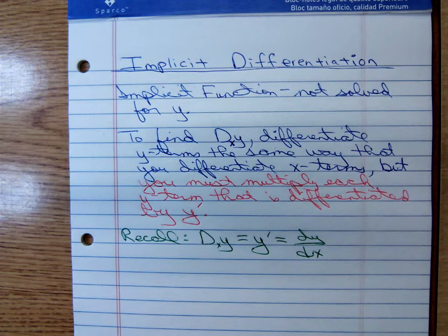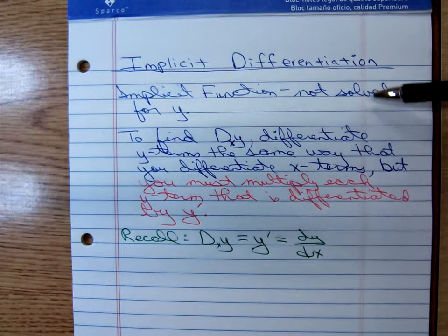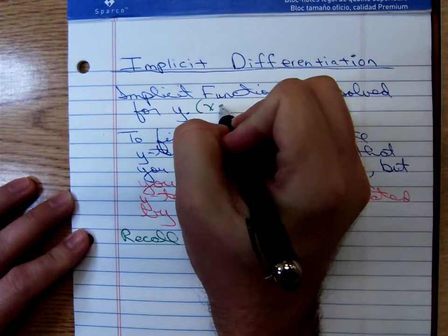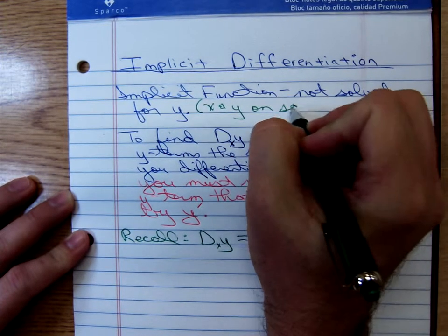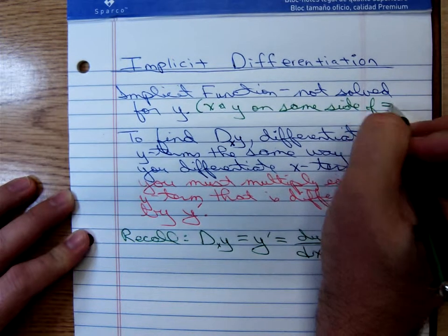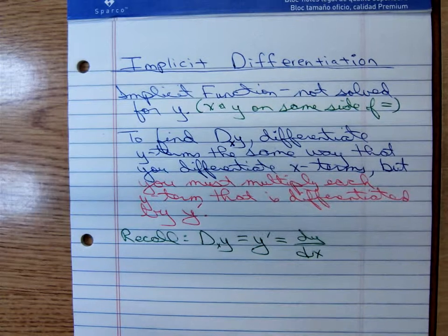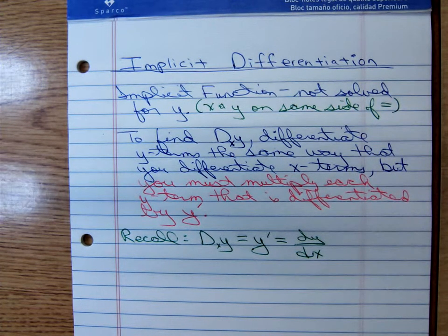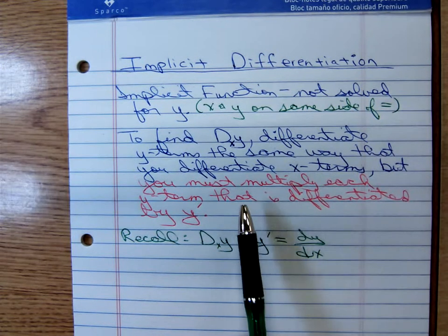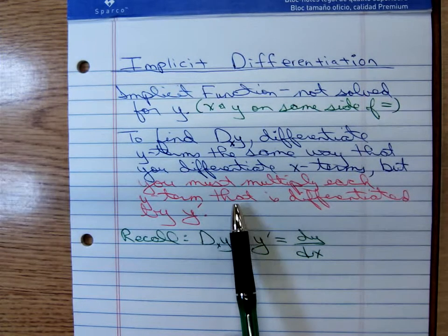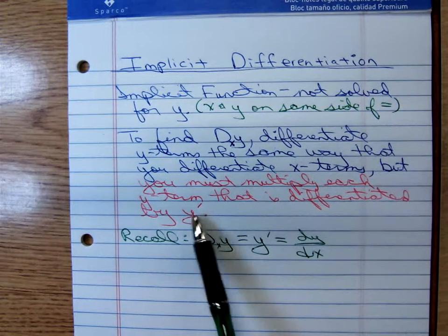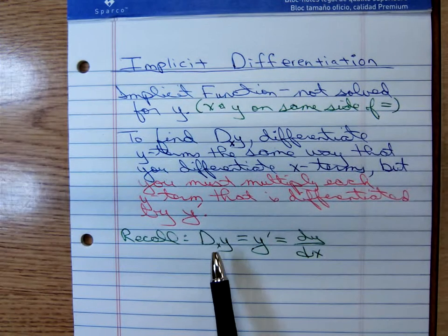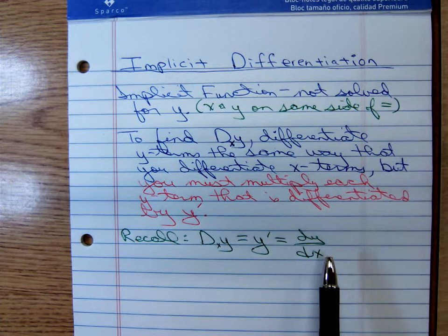We haven't had x's and y's on the same side of the equation. An implicit function is one that's not solved for y — you could have x and y on the same side of the equals sign. To find the derivative of y with respect to x, we'll differentiate the y terms or y factors the same way that we differentiate the x's.